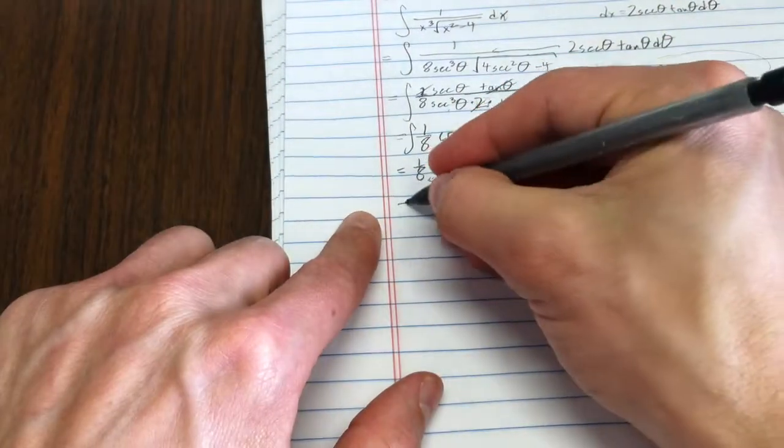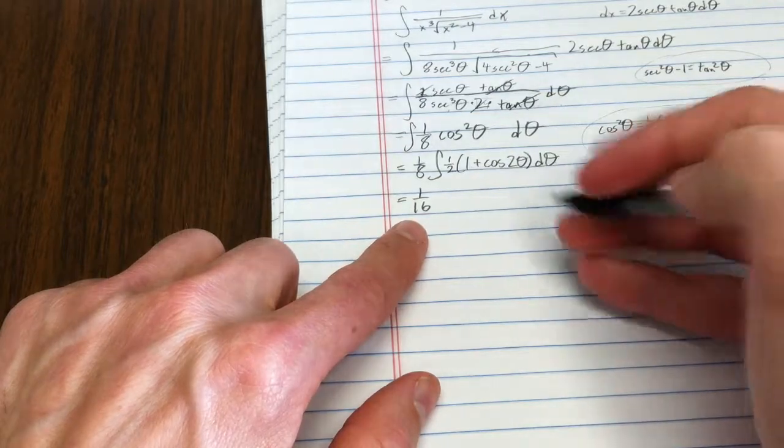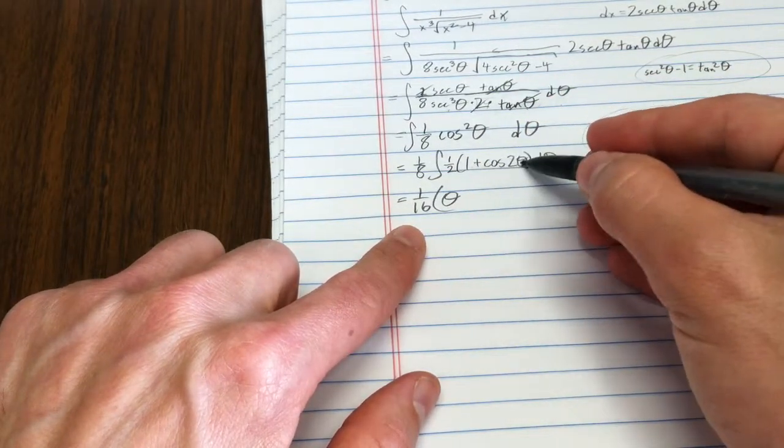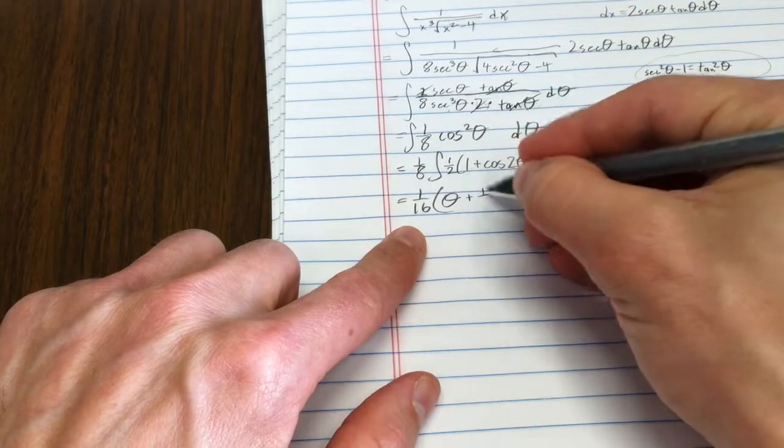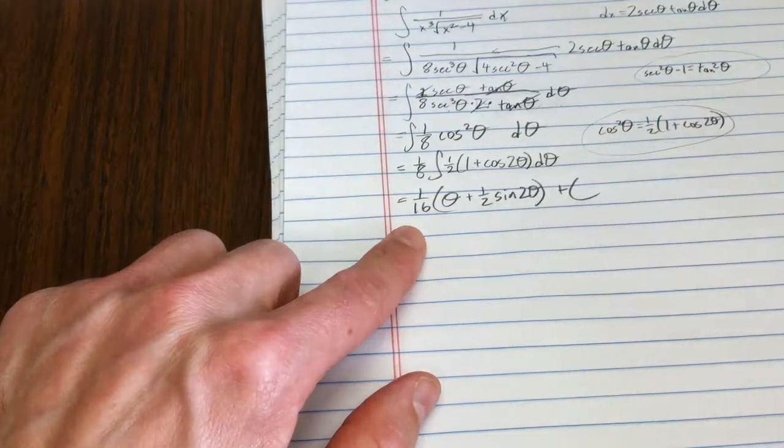So, that's 1 half times 1 plus cosine 2 theta d theta. That's fairly tractable to integrate. I now have 1 sixteenth out in front. The integral of 1 in terms of theta is just theta. The integral of cosine 2 theta is 1 half sine 2 theta. That's all plus c.